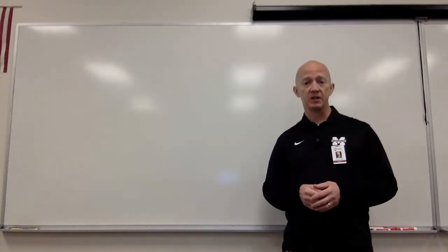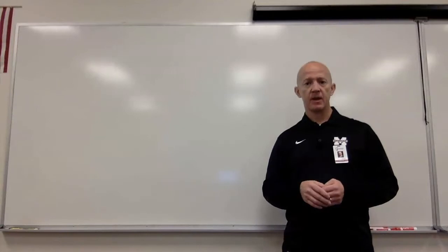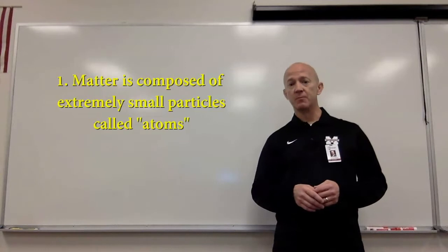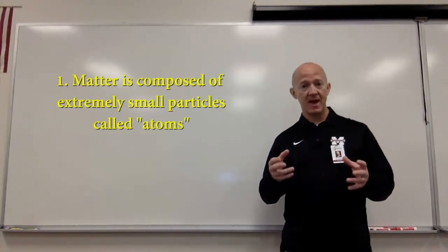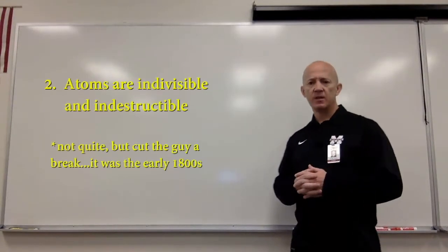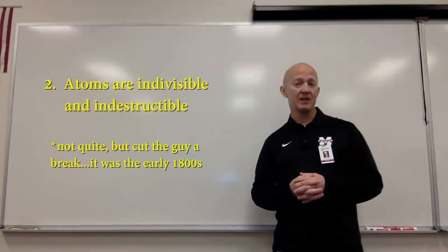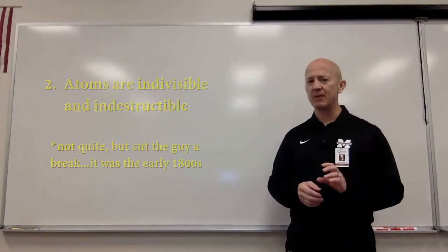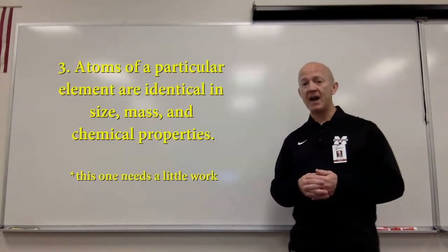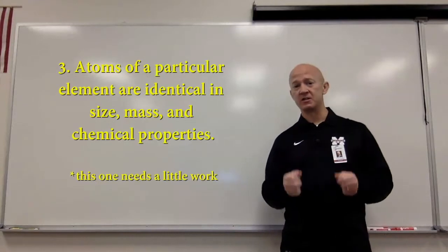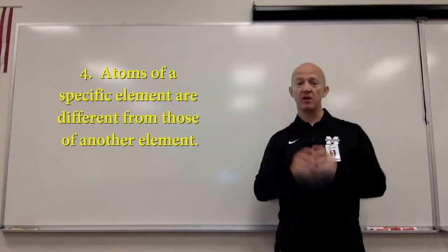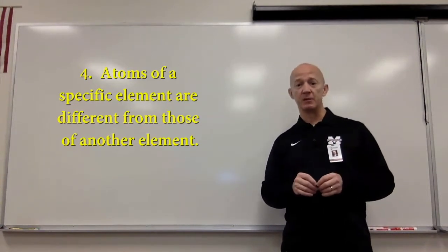In 1803, he published his atomic theory. These are the ideas of that atomic theory. Number one: matter is composed of extremely small particles called atoms — taking the word from Democritus. Number two: atoms are indivisible and indestructible. Now, you have to remember that at the time, we had not split the atom yet, so it made perfect sense. Number three: atoms of a given element are identical in size, mass, and chemical properties. Number four: atoms of a specific element are different from those of another element.